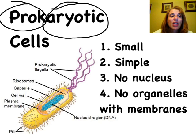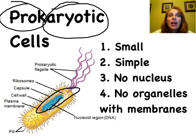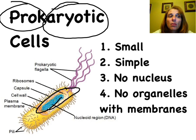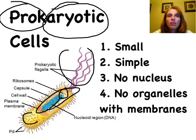It's just got this little nucleoid region inside, and the nucleoid region has DNA, because obviously it needs that in order to survive. It's got some very small ribosomes, and then it might have some pili and some flagellum to help it move around. But it's a very primitive and very simple organism.